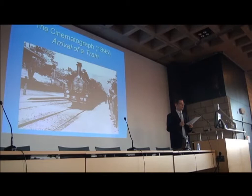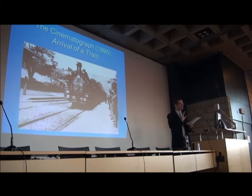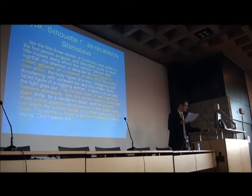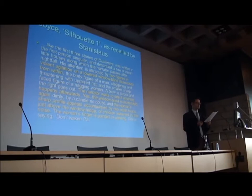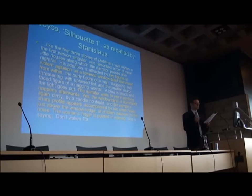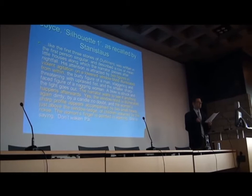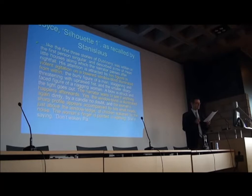According to Joyce's brother Stanislaus, when Joyce was quite young he composed a series of sketches which he called Silhouettes, written somewhere around the middle of the 1890s — Joyce would have been certainly under the age of 16. Stanislaus described the first sketch: it was written in first-person singular and described a row of mean little houses along which the narrator passes after nightfall. His attention is attracted by two figures in violent agitation on a lowered window blind, illuminated from within — the burly figure of a man staggering and threatening with upraised fist, and the small sharp-featured figure of a nagging woman. A blow is struck.